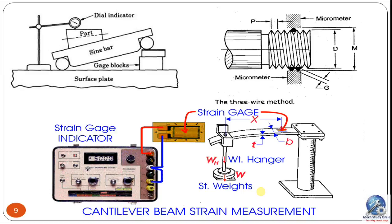For the three-wire method, three wires and a micrometer screw gauge are used to measure the pitch circle diameter. Another example is the strain gauge — since strain in a member cannot be measured directly, a strain gauge is applied on the part, converting strain into resistance, which is then converted into a change in voltage or current that can be easily identified.